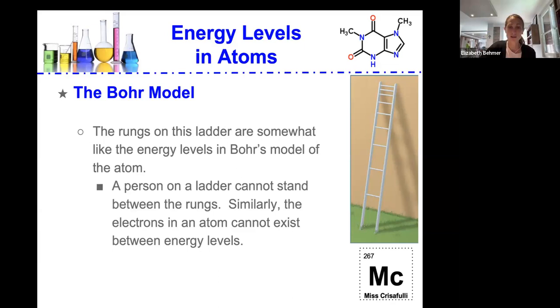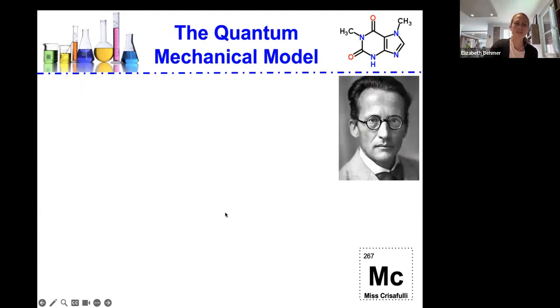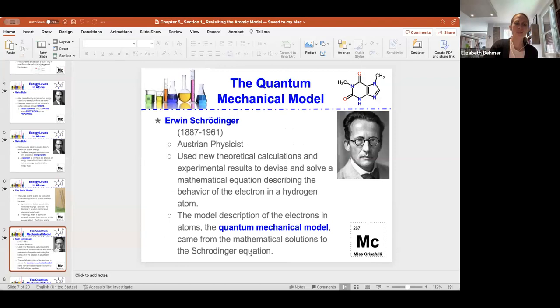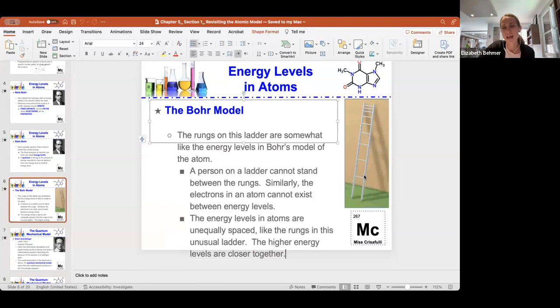So Bohr is saying that the electrons that are surrounding the nucleus of an atom are in specific energy orbits around that nucleus. The energy levels in atoms are unequally spaced like the rungs in energy levels. So the higher energy levels are closer together.